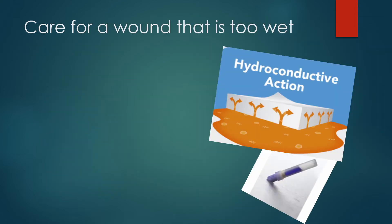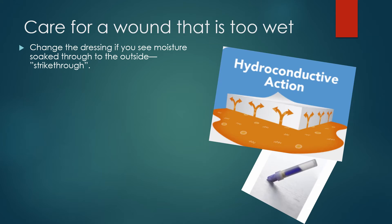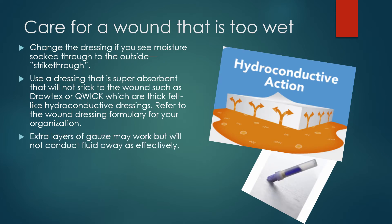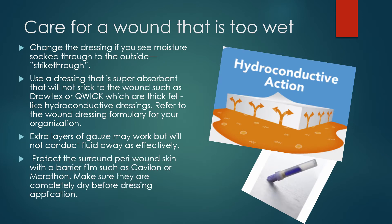For care of a wound that is too wet: change the dressing if you see moisture soaked through to the outside — that's called strikethrough. Use a dressing that is super absorbent and will not stick to the wound, such as Drotex or Quick, which are thick felt-like hydroconductive dressings. Refer to the wound dressing formula for your organization. Extra layers of gauze may work but will not conduct fluid away as effectively as a hydroconductive dressing. Then protect the surrounding peri-wound skin with a barrier film such as Cavilon or Marathon, making sure they are completely dry before dressing application.